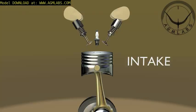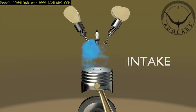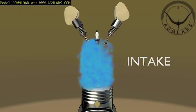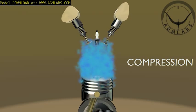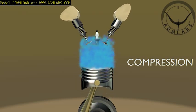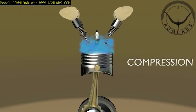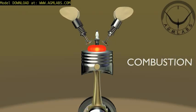The inlet valve is opened and the fuel-air mixture is drawn in. As the piston travels down, the valve is closed and the piston travels back up the cylinder, compressing the fuel-air mixture. Just before the piston reaches the top of its compression stroke, a spark plug emits a spark to combust the fuel-air mixture.